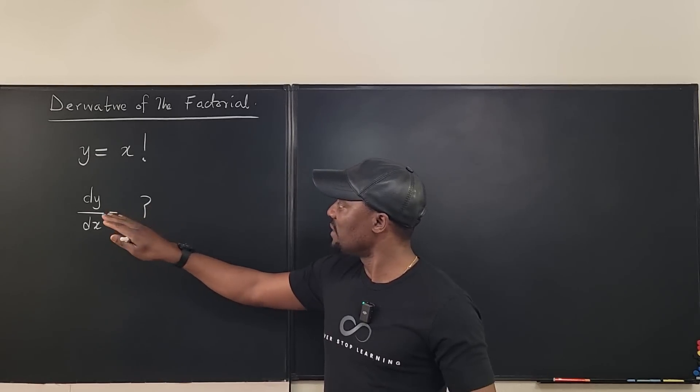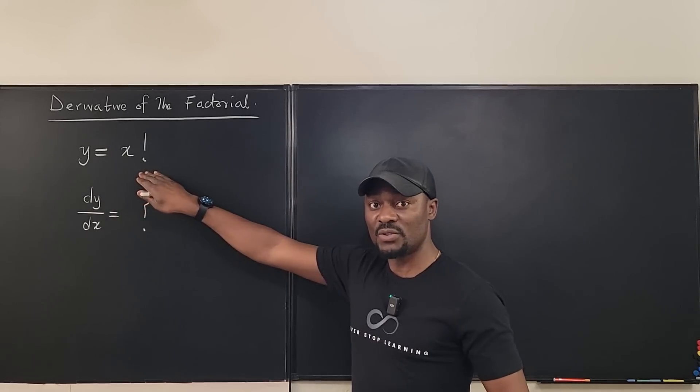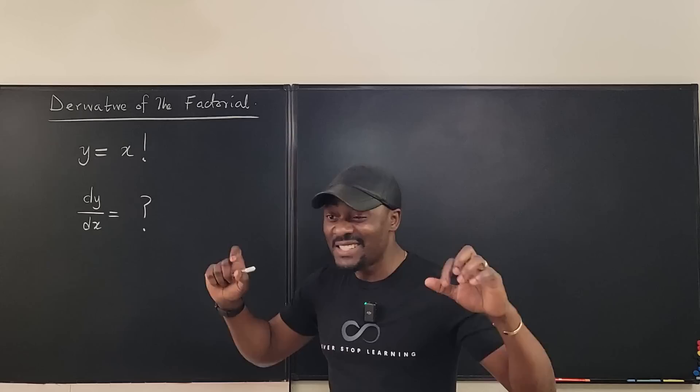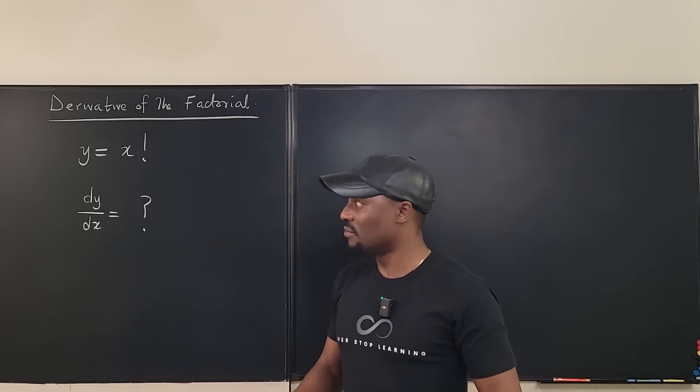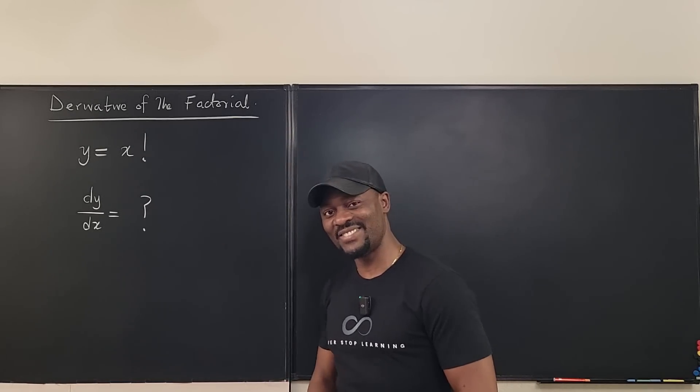We just want to find what dy/dx is going to be given that y is equal to x factorial. We just have to write the function and take the derivative. Let's get into the video.